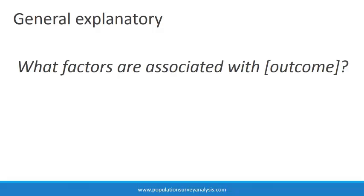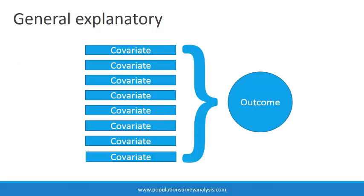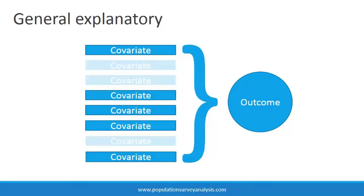There are many formats that a quantitative research question can take. A general explanatory research question has the format: what factors are associated with outcome? For example, what social and demographic characteristics are associated with intimate partner violence in Rwanda? The researcher develops a model with multiple factors potentially associated with the outcome and narrows down which key factors are most important based on the magnitude, direction, and statistical significance of the associations.